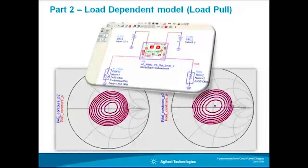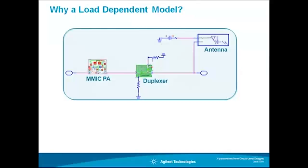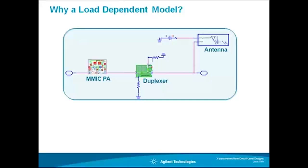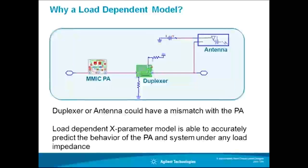But what if my system contains cascaded modules that are not well matched to 50 ohms? We need a more versatile model that can be accurately used with any load impedance. For example, here you see the power amplifier interfacing with a duplexer and an antenna. Sometimes we do not really know what the impedance load on that power amplifier is, and as a result we get impedance mismatch in magnitude and phase with the PA at both the fundamental frequency and the harmonics.